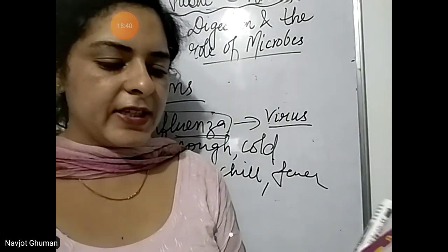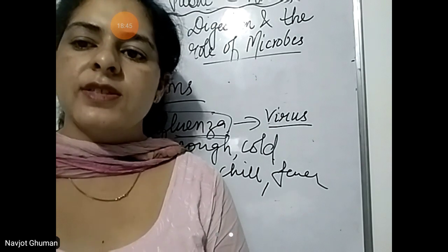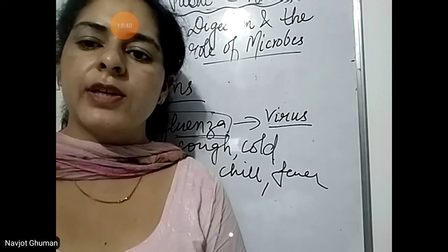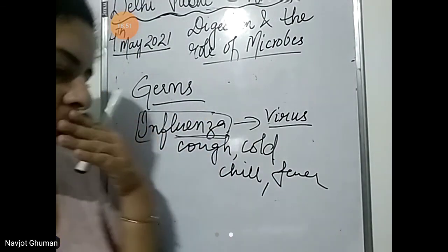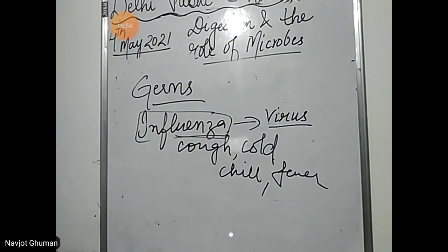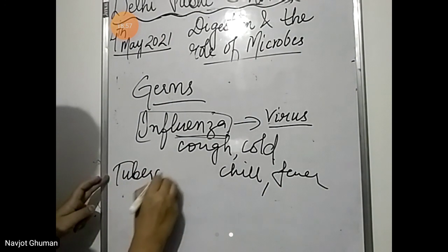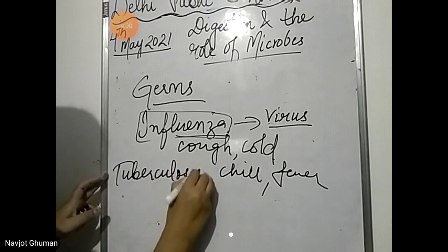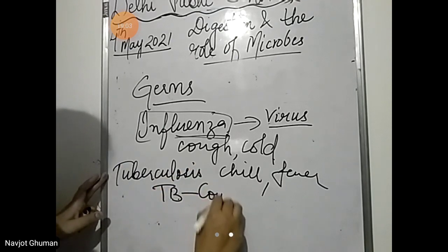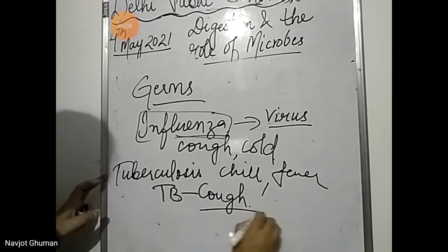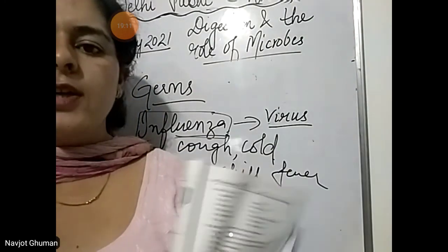Bacteria cause diseases such as typhoid — in which you have fever and headache. Tuberculosis, also called TB — in this you have severe cough. And cholera — cholera is caused by bacteria, and the symptoms of cholera are loose motions and vomiting.